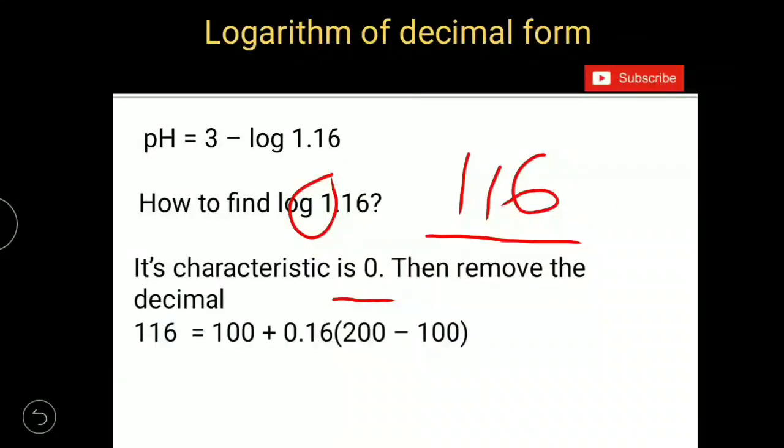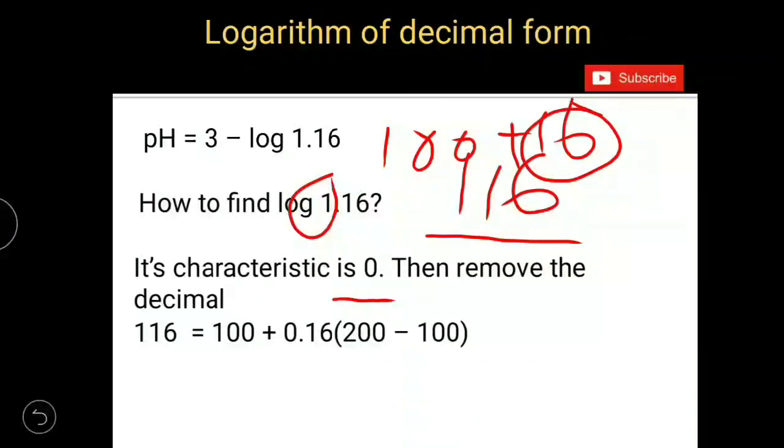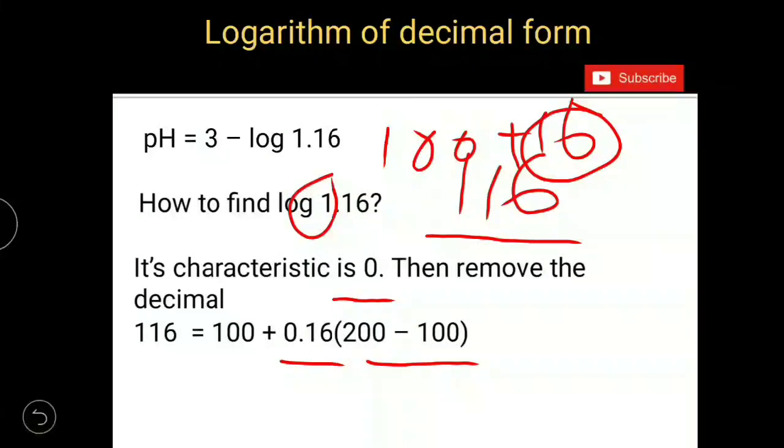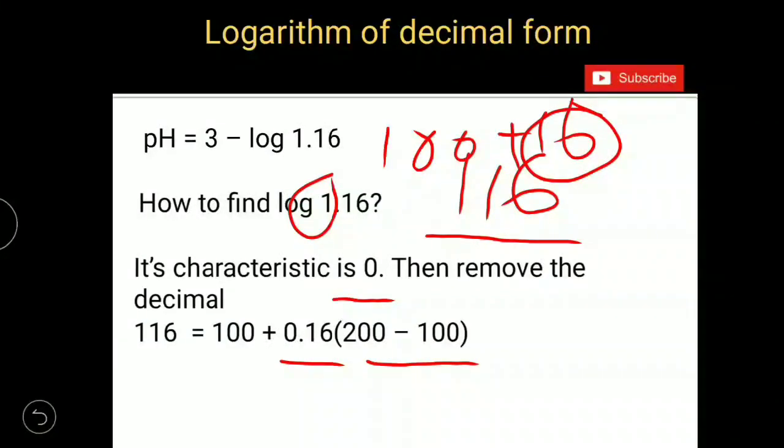116, we can write it as 100 plus 16. And how this 16 can be defined? 0.16 into 200 minus 100. Because 116 is present in between 200 and 100. Use the same equation to find out mantissa also.